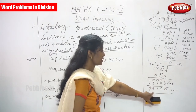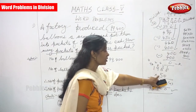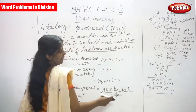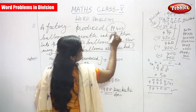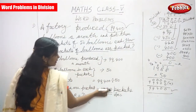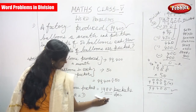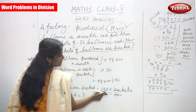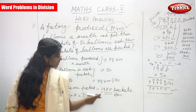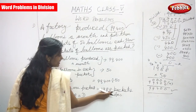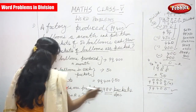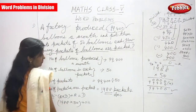Quotient multiplied by the divisor gives you the dividend. There is no remainder, so no need to add. The result is the same — 99,400. So your answer is correct. 1,988 is the right answer. 1,988 packets are packed in the factory. Thank you.